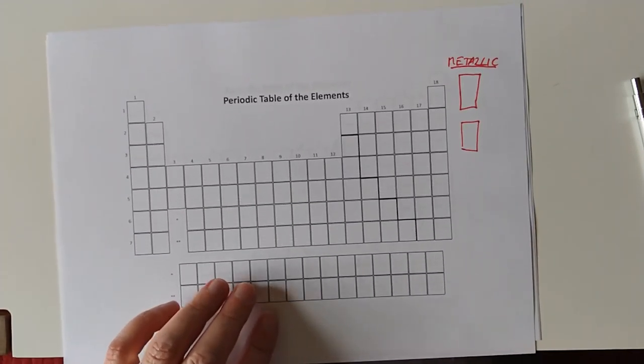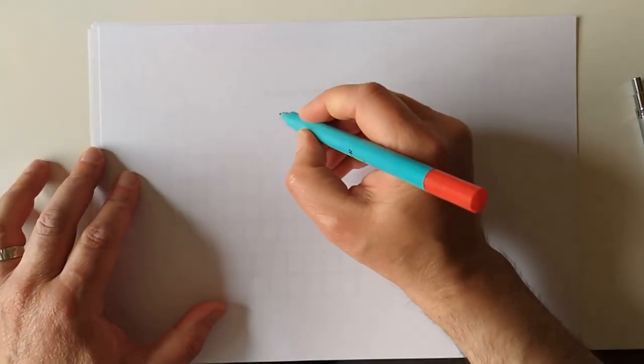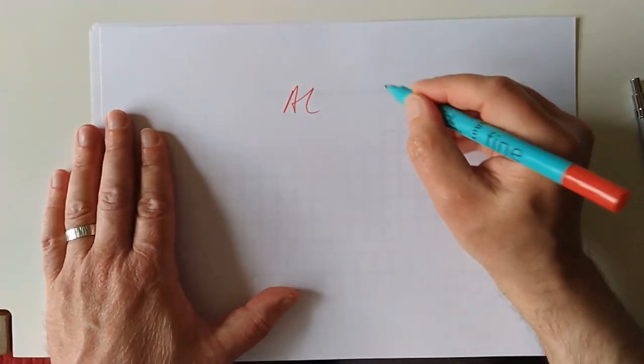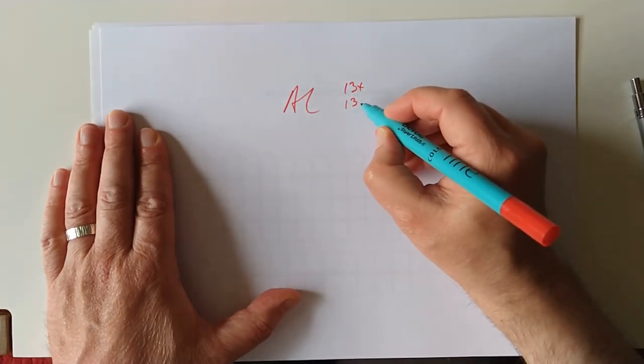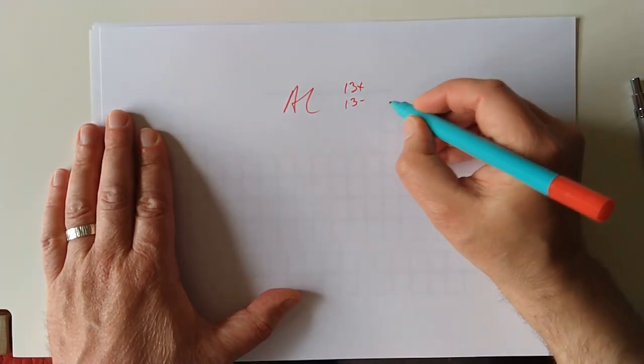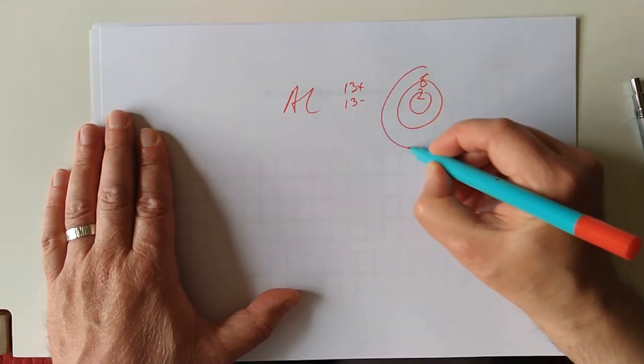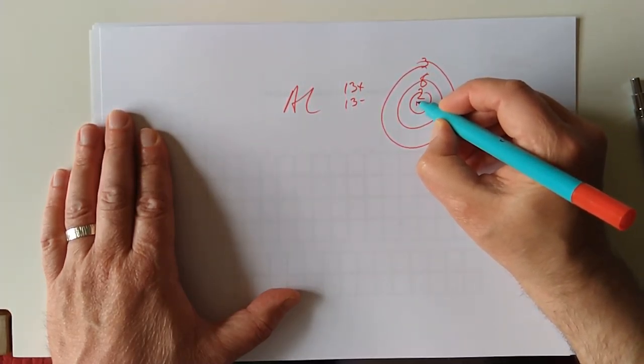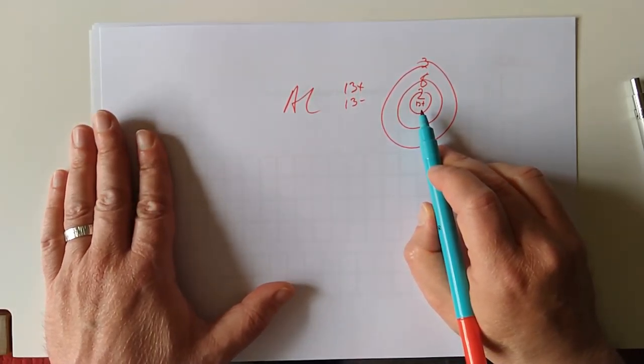Metallic bonding, if you cast your minds back to National 5, I'll run through it very quickly. Metallic bonding applies to most of the periodic table. If we take an atom of aluminium, aluminium has 13 protons, so an atom has 13 electrons as well.